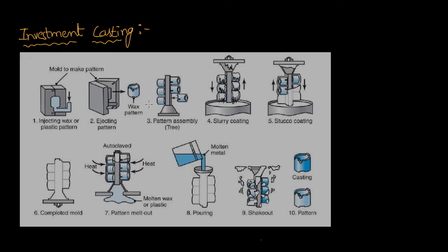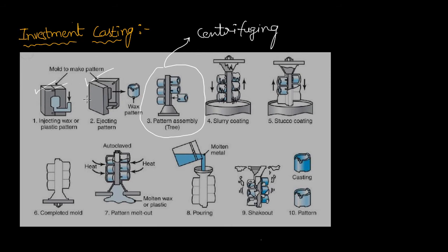Looking at the investment casting equipment: first, we make a pattern using mold boxes, similar to sand casting. However, the pattern tree can be directly made by centrifuging — no need for mold boxes or die casting. Centrifuging is the only method to produce multiple patterns with included gating elements at one time, making it the cheapest method for this purpose.